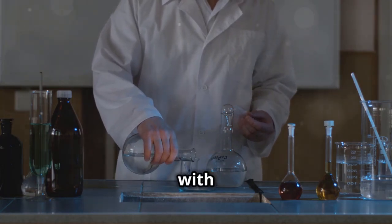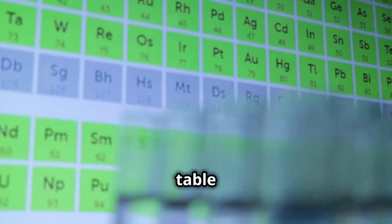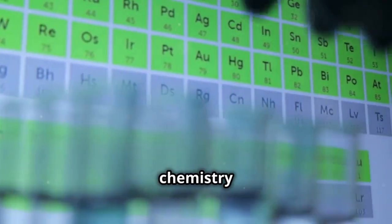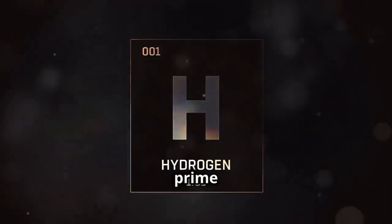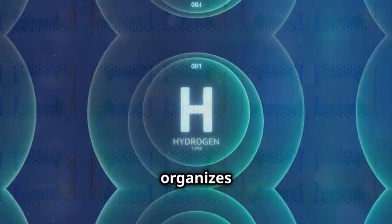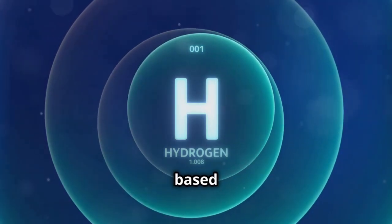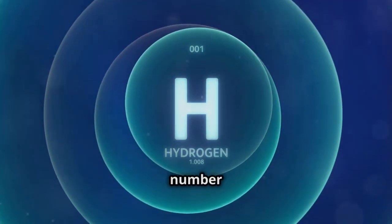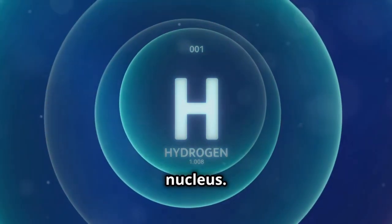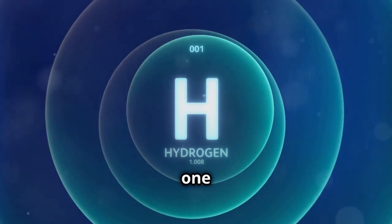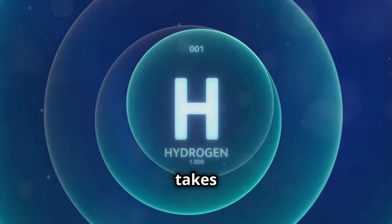Let's start with the basics. The periodic table is like the ultimate chemistry cheat sheet, and hydrogen has a prime spot at the very top. See, the periodic table organizes all the known elements based on their atomic number, which is the number of protons in an atom's nucleus. Hydrogen, with just one proton, proudly takes its place as element number one.